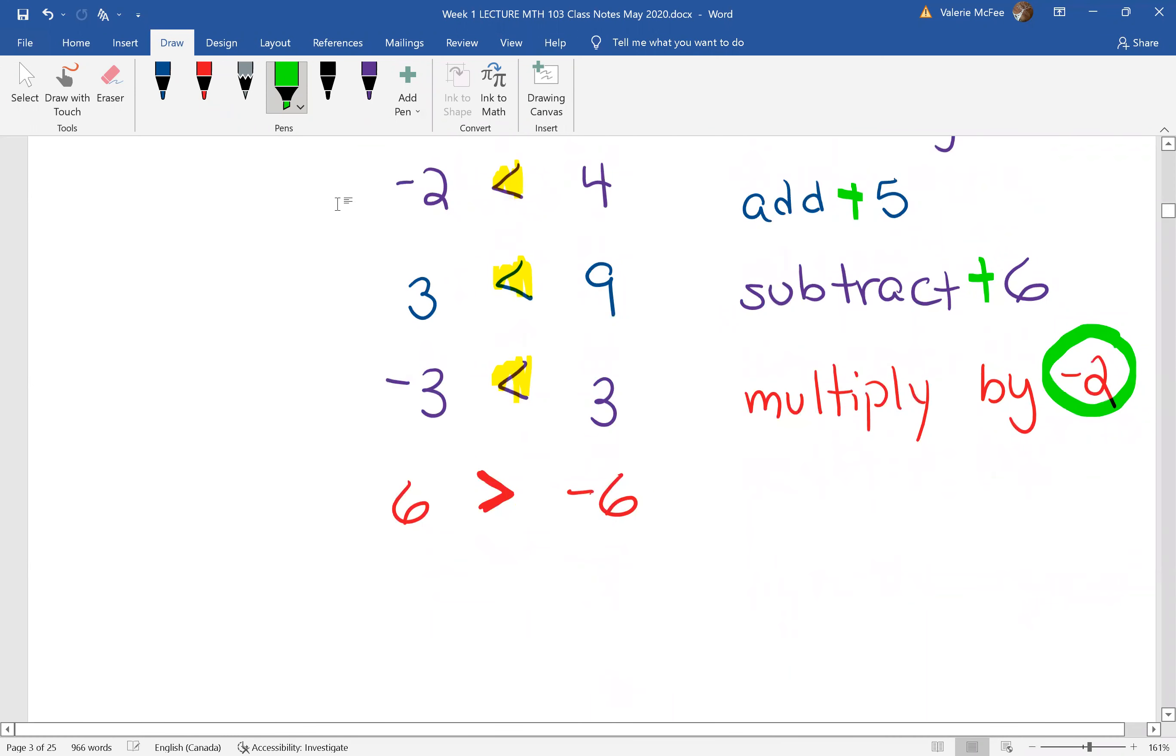What happens when I divide? Let's divide by negative three. Six divided by negative three, negative six divided by negative three. Again, the sign changed direction.